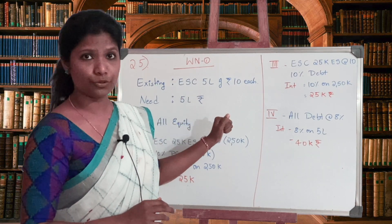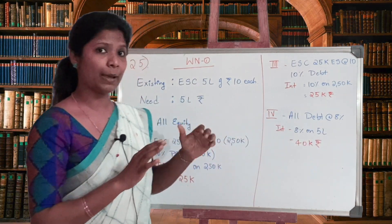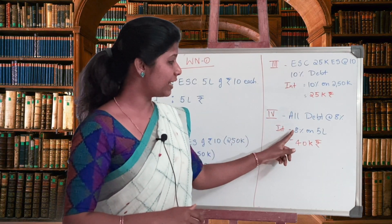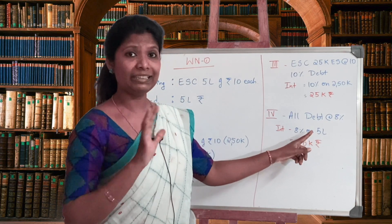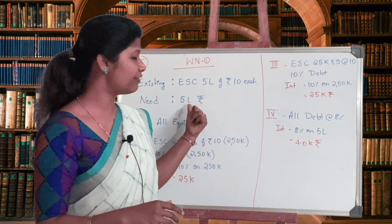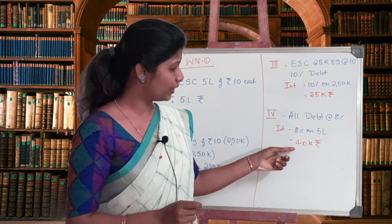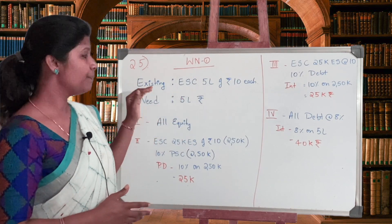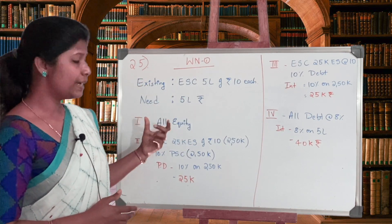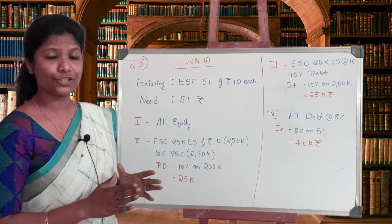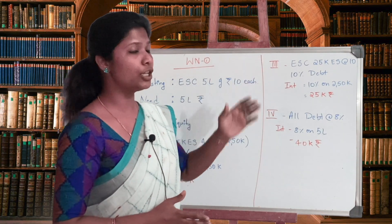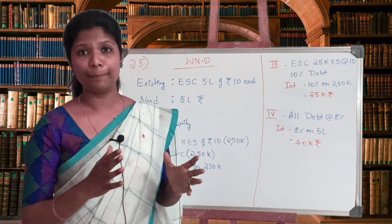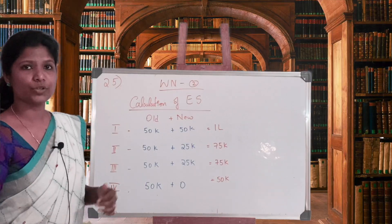My last plan is all debenture at 8 percent. Plan 4 raises the entire 5 lakh through debenture. Plan one was completely equity; plan 4 is completely debenture. Interest here is 8 percent on 5 lakh, which gives 40,000 rupees. So this completes working note one: plan one all equity, plan two equity and preference, plan three equity and debenture, plan four complete debenture capital.